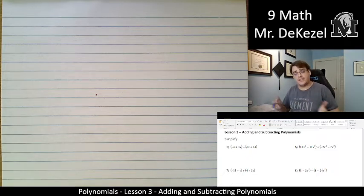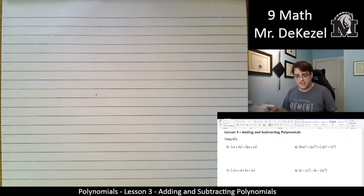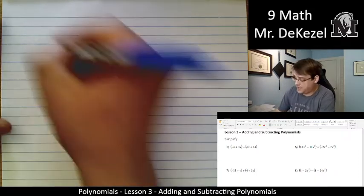If we are adding, we leave the signs the same in the second part. And if we are subtracting, we flip all the signs, and then we proceed. Let's do number 7.